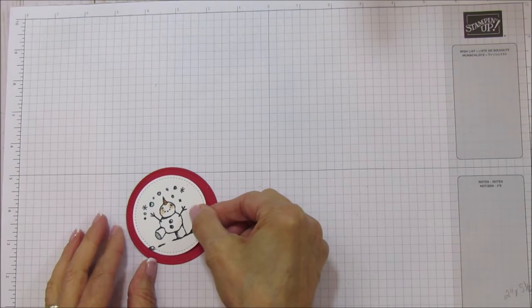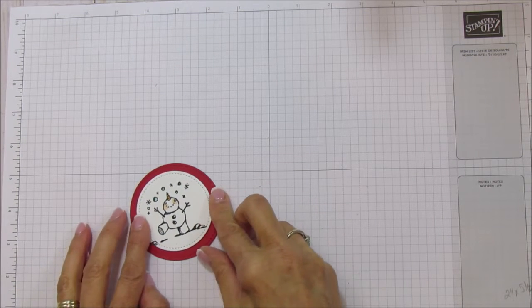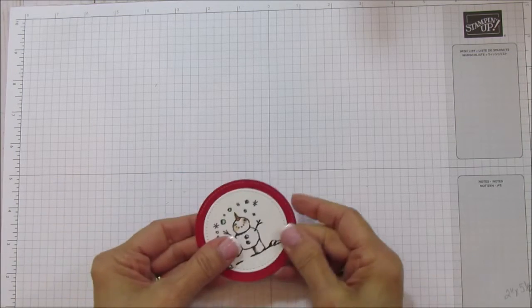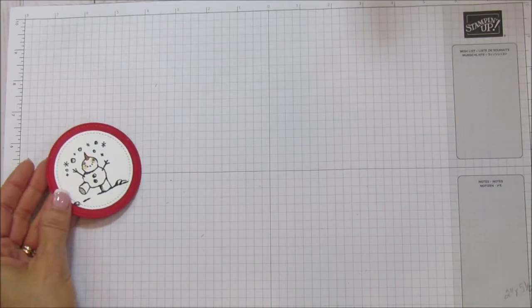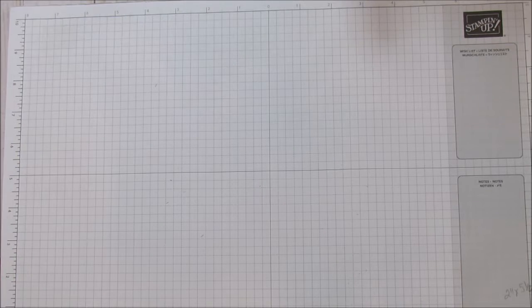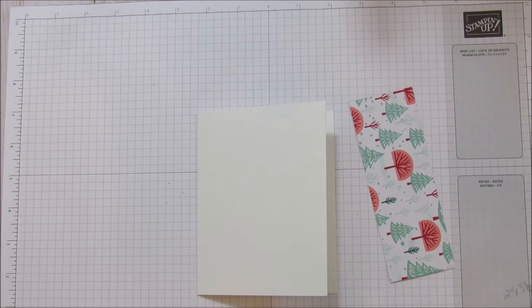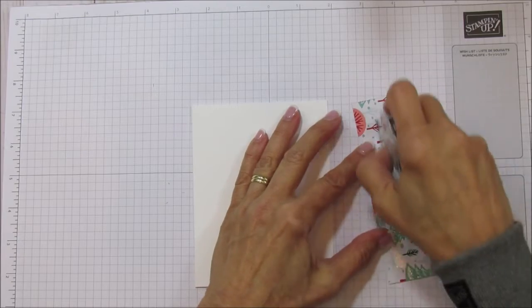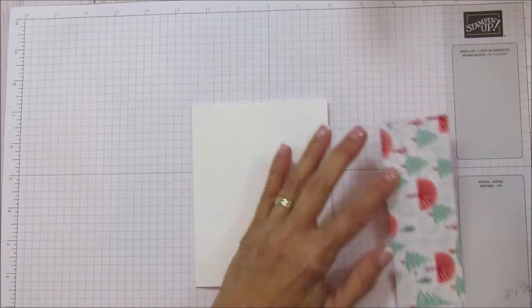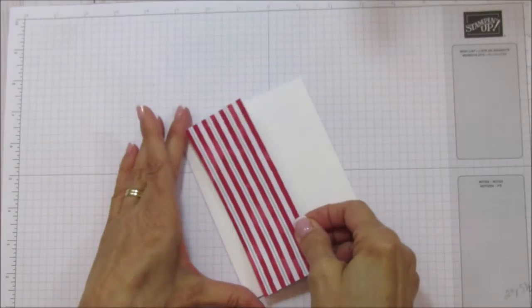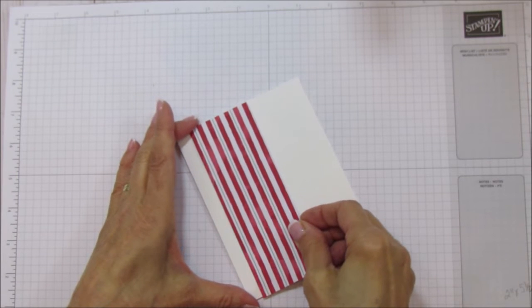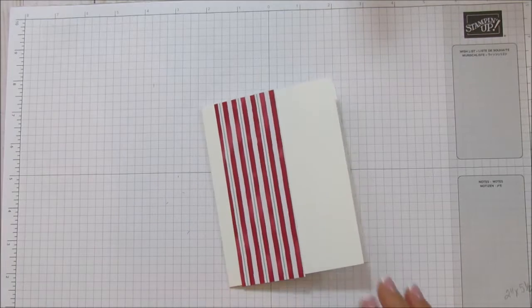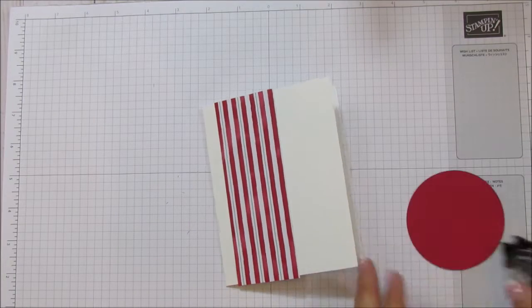So I'm going to use some wet glue, and we're going to layer him right in the center. I love the stitching, so I try to use it as much as possible. So let's bring our card base in. We're going to mat our Designer Series paper, and then we're going to go ahead and put our snowman on.